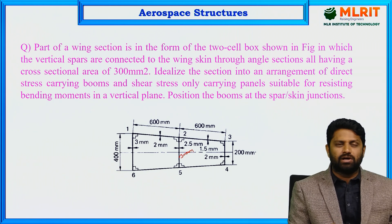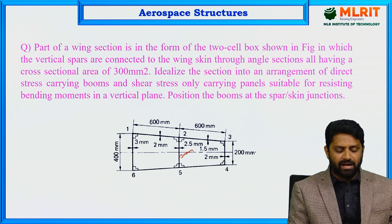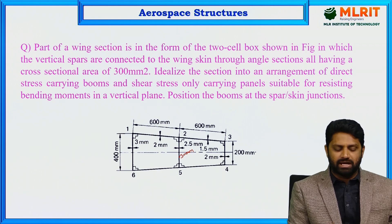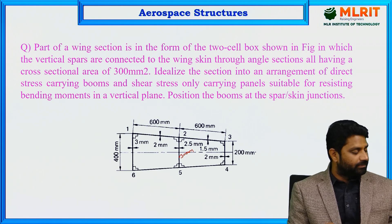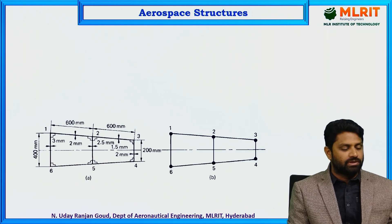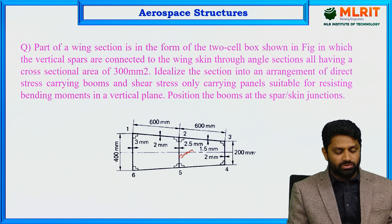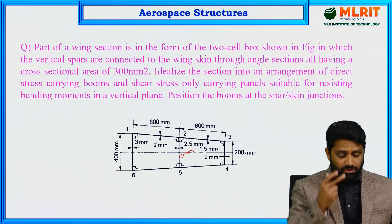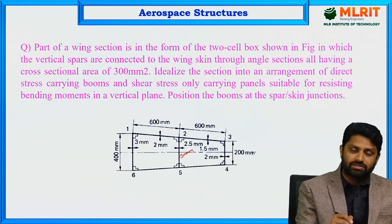The given panels have varying thicknesses labeled for panels 1-2, 2-3, 3-4, 4-5, 5-6, and so on. The very first thing we need to do is idealize the given actual section into the idealized section — we remove the angle sections and replace them with booms.